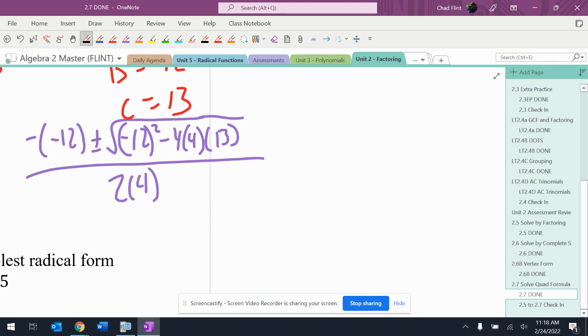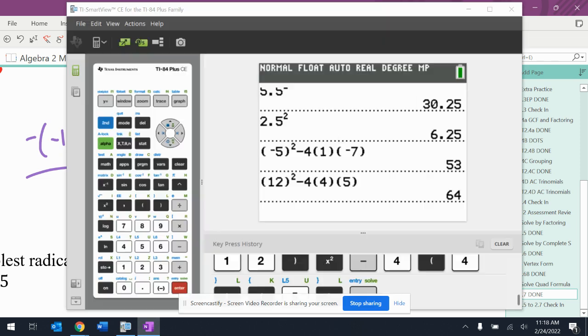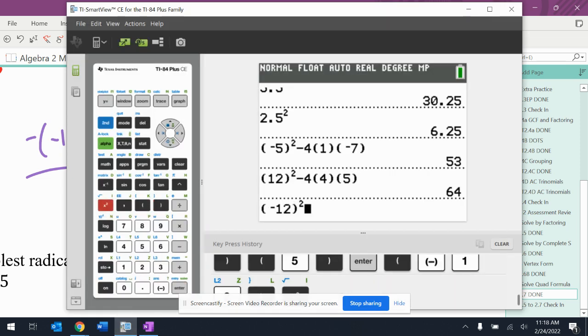All right. Well, negative negative 12 is 12. Two times 4 is 8. And then I got to take my calculator: negative 12 squared minus 4 times 4 times 13.